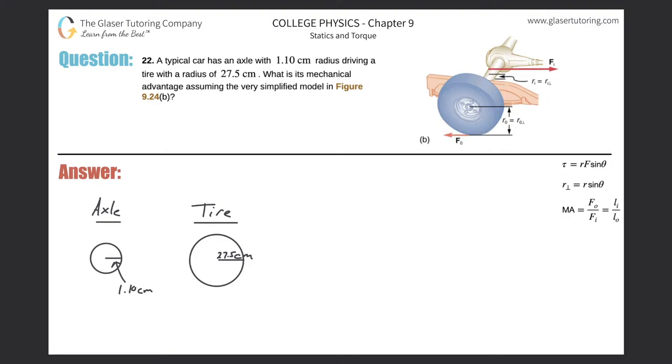Number 22. A typical car has an axle with 1.1 centimeter radius driving a tire with a radius of 27.5 centimeters. What is the mechanical advantage assuming the very simplified model?